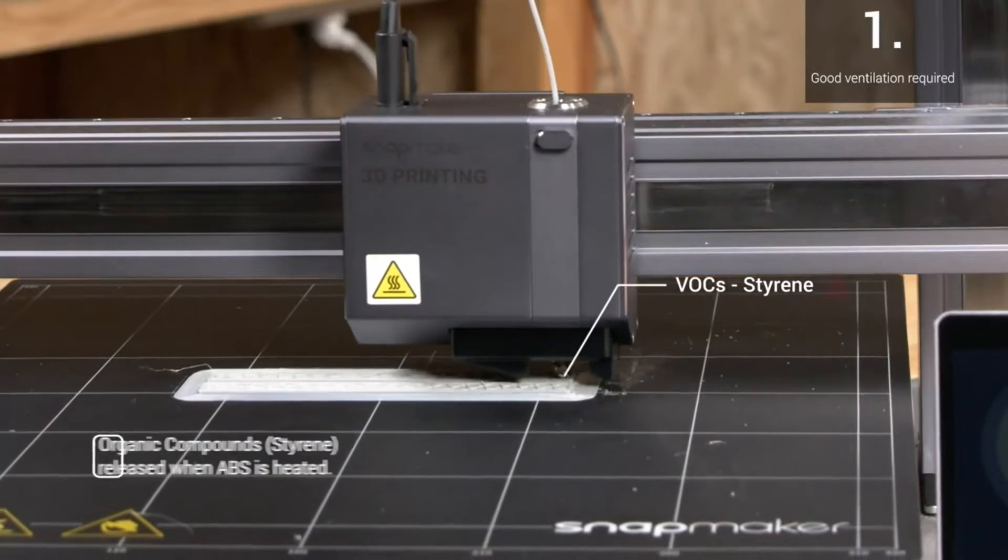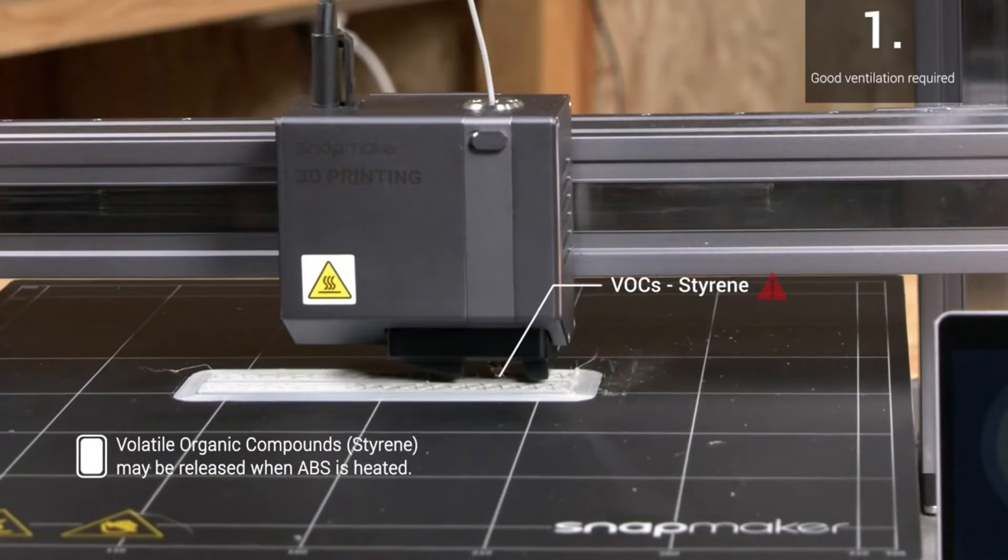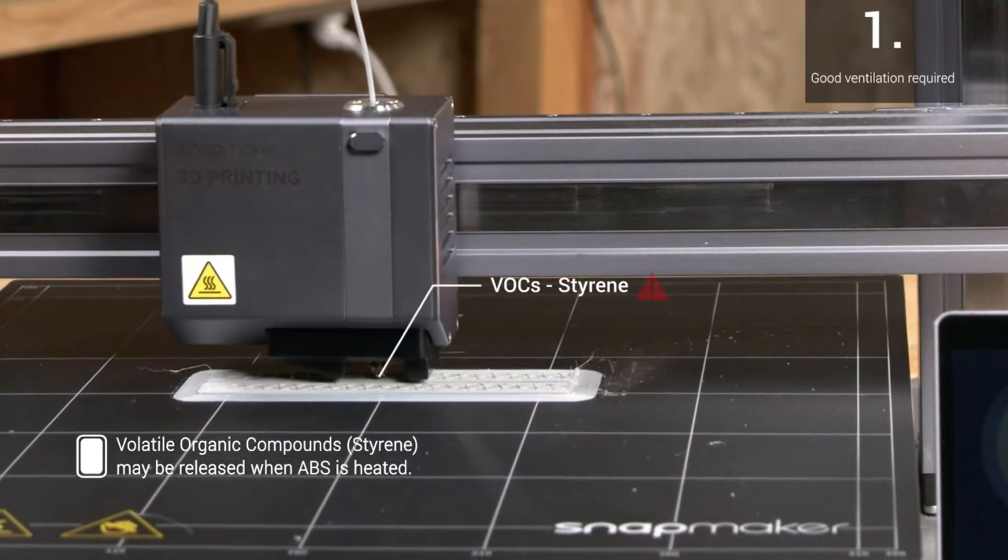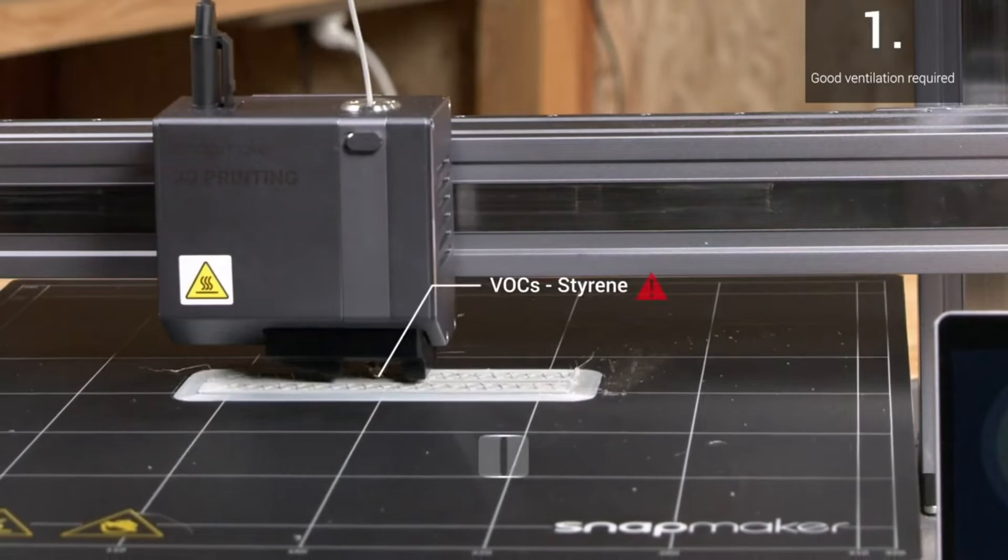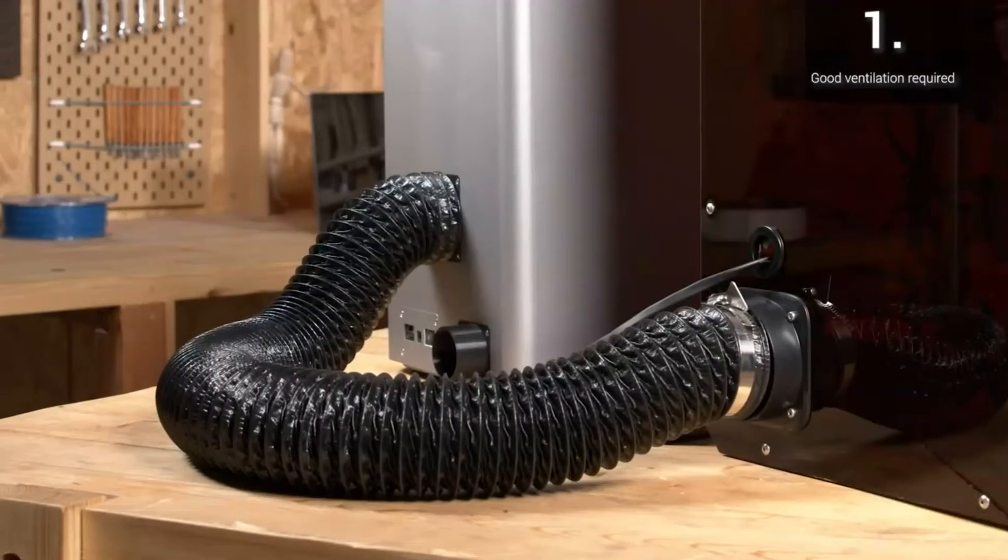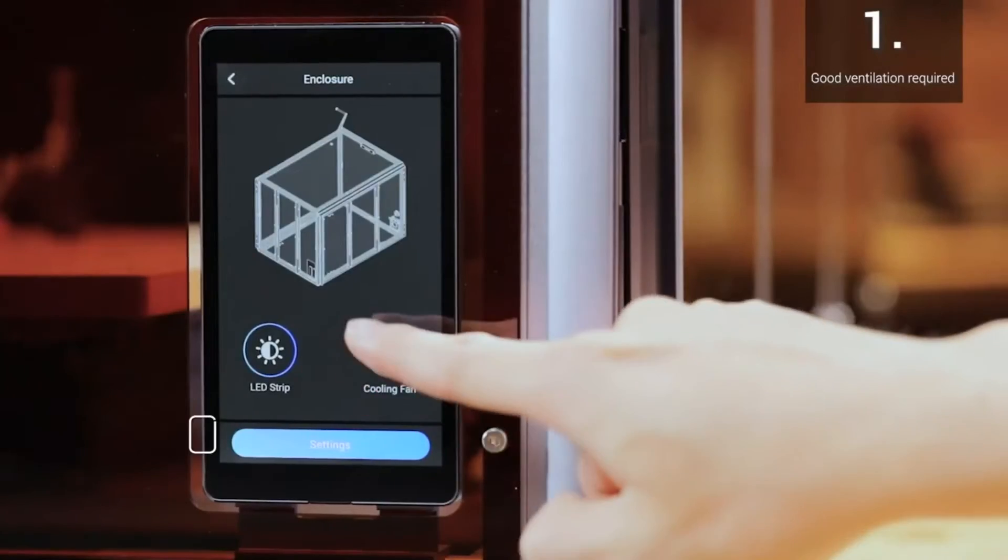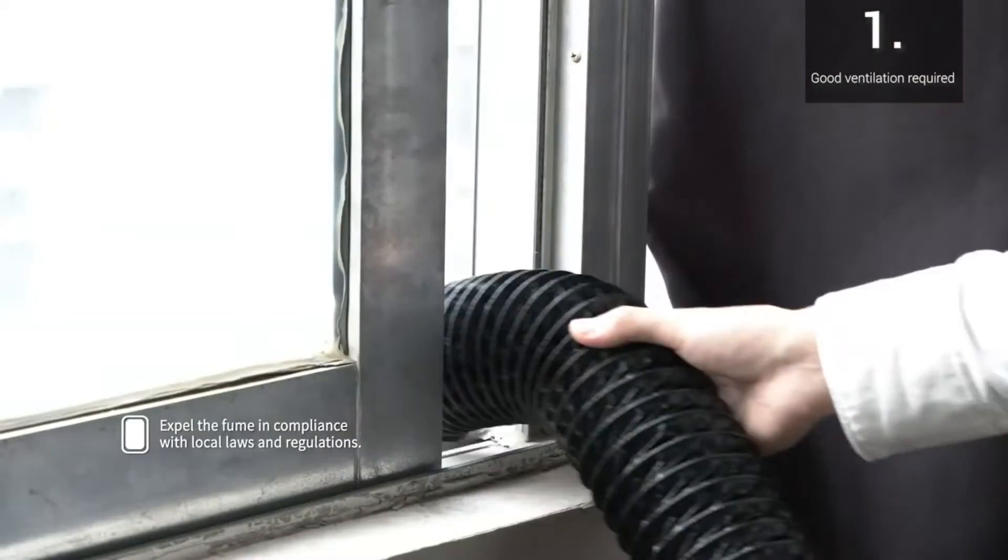First, ABS produces a kind of VOCs called styrene when heated, which is smelly and harmful. So, keep good ventilation during printing. You can use a dedicated air purifier or expel the fume outside with an enclosure equipped with an exhaust fan.